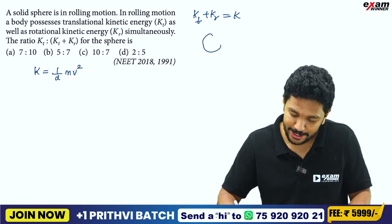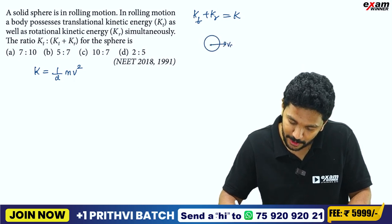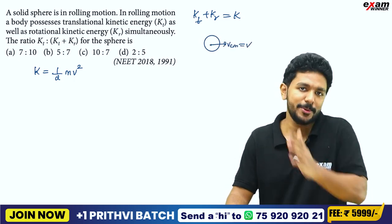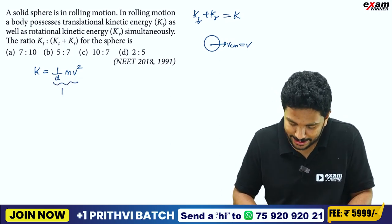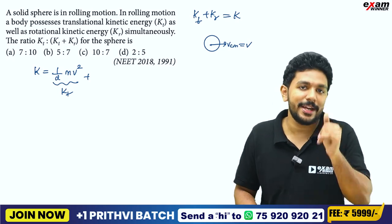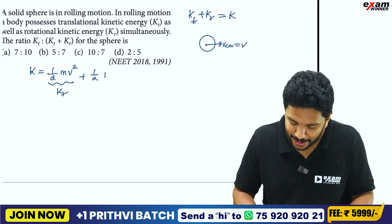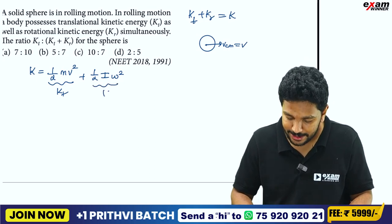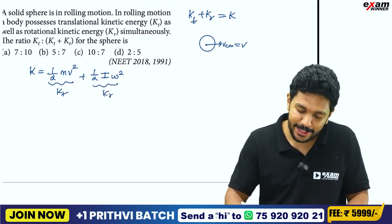If you see the sphere rolling, looking at the center of mass velocity, it will be v — the center of mass velocity. Half mv squared is translational kinetic energy. Plus the rotational kinetic energy, which is expressed as one half I omega squared.